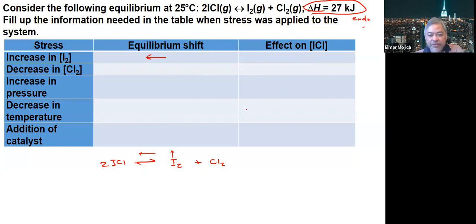The effect on ICl: since the backward reaction is favored, you produce more ICl. So the concentration of ICl increases.